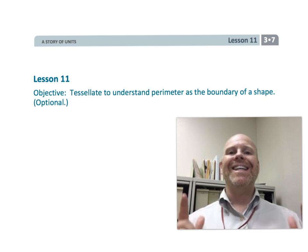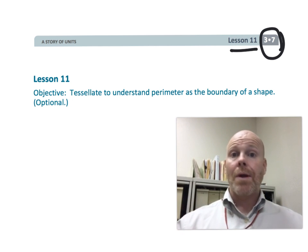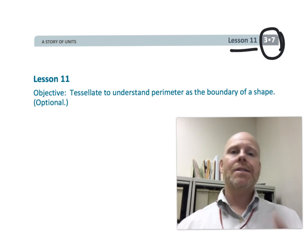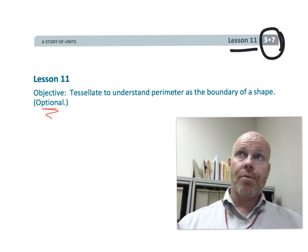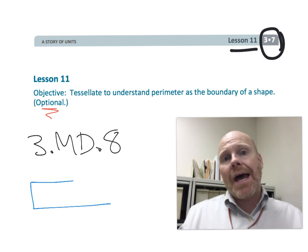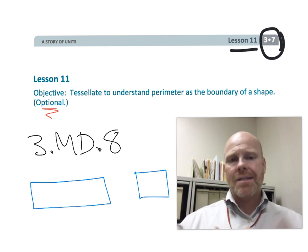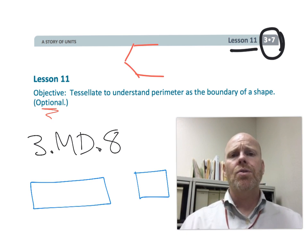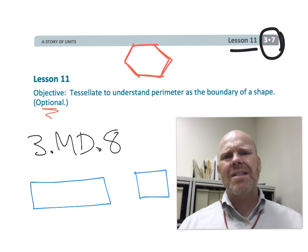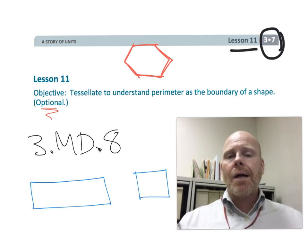This is third grade module 7 lesson 11. In this lesson, students are going to continue tessellating figures and measuring the perimeter of tessellated figures. This lesson is optional because the third grade standard 3MD8 is really talking about perimeter of straight-edged figures, and this lesson lets students experiment with figures other than squares and rectangles — like hexagons — and possibly come up with perimeters of funky shapes. It's kind of fun though.